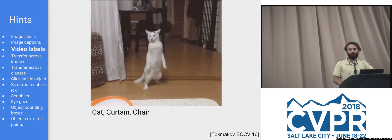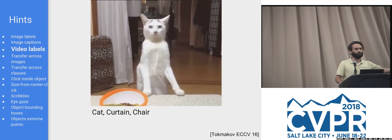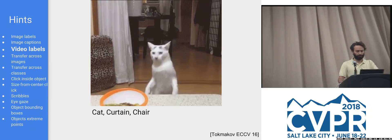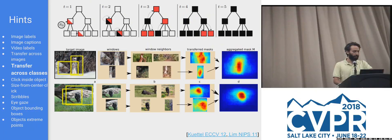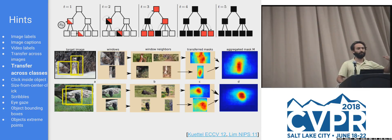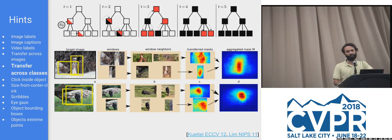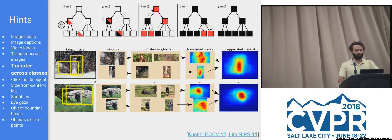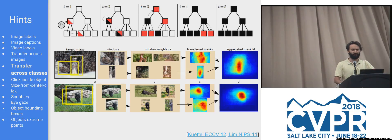Video labels are a way to exploit the motion information prior — if your object moves, having a label on videos is a strong cue. Another interesting hint is transferring across classes: sometimes you can get away with something bolder where you say 'pears are basically dogs' — if you have available data for dogs you can transfer to things expected to be visually similar. This works quite well; it's another dimension of knowledge transfer guiding yourself on things expected to be similar across classes.